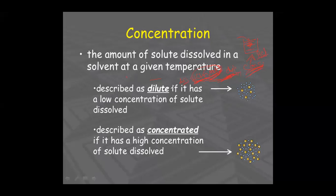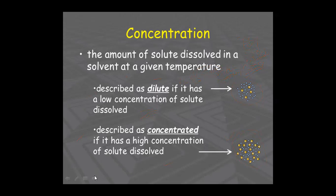To decrease concentration, you add water. Dilute means low concentration of solute dissolved — for example, one spoon of sugar in water is low concentration. If you add more and more sugar, you are increasing the concentration. Concentrated means high concentration of solute dissolved. The more solute you dissolve, the more concentrated the solution becomes.